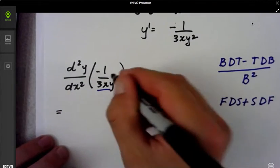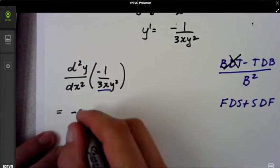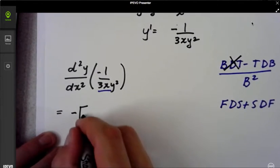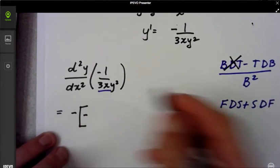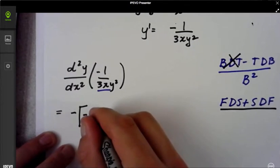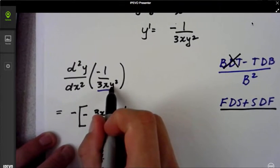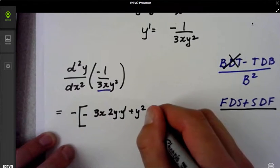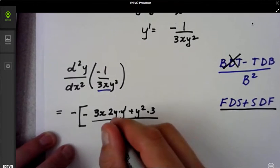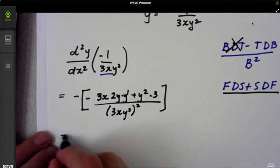Bottom times derivative of the top. The derivative of the top of a constant is zero. So this actually is gone. This negative I'm going to bring out here. This negative is going to go right here. So I'm working at top, which is one times the derivative of the bottom. Derivative of the bottom now is this first, which is 3x times derivative of y squared, which is 2y times y prime. There's first times derivative of the second plus second times derivative of the first. So plus y squared times derivative of 3x, which is just 3. That whole thing is over 3xy squared to the second.